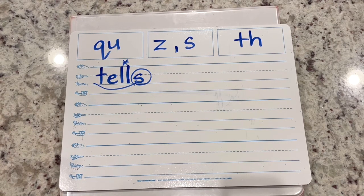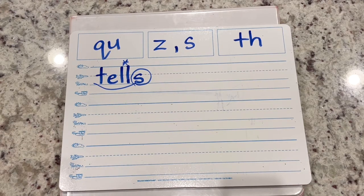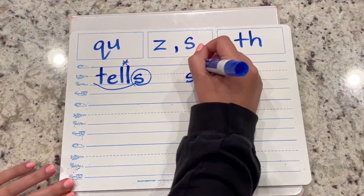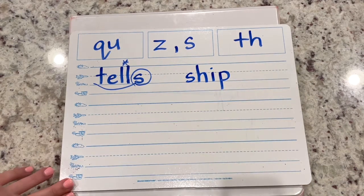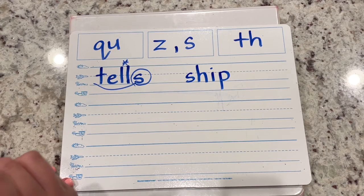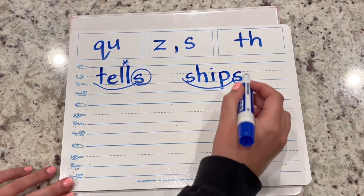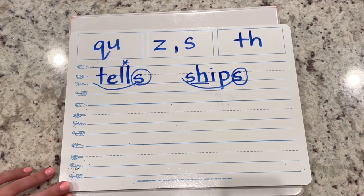Write the word ships. The base word is ship: SH-I-P. Add something to make it say ships - the suffix S. Scoop your base word, circle your suffix, underline your digraph SH.